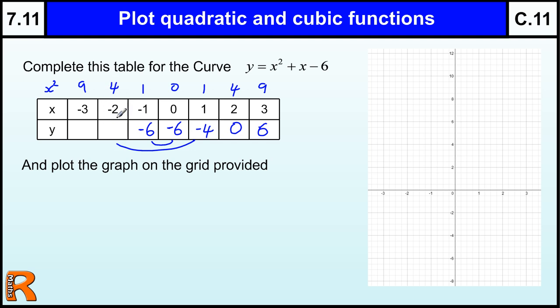So minus 2 squared is 4. Add minus 2 is 2. Take away 6 is minus 4. So there's the symmetry coming here. So this one should be 0. Minus 3 squared is 9. Add minus 3 is 6. Take away 6 is 0. So there we've plotted lots of values to get us coordinates to plot this graph.